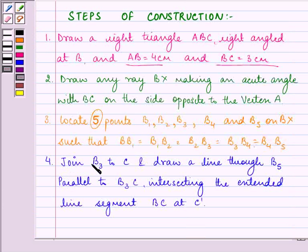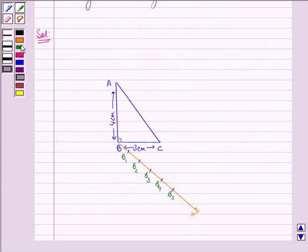Further we need to join B3 to C as 3 is the smaller of 5 and 3 in 5 by 3. So we need to join B3 to C now. So let us join B3 to C like this.